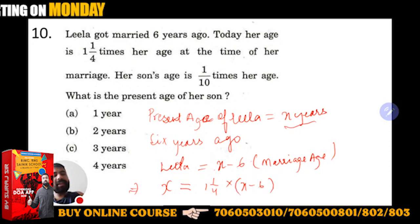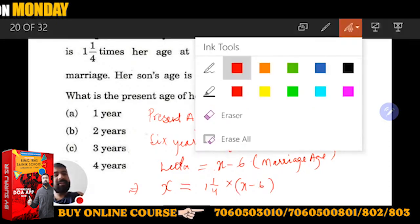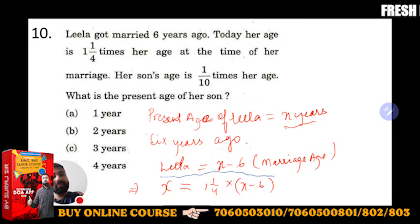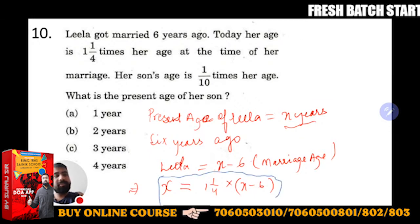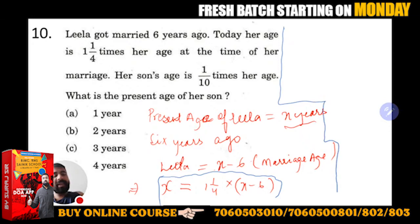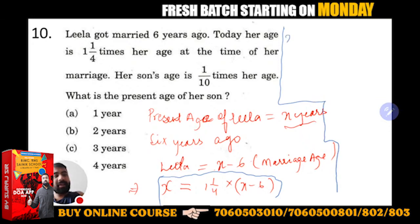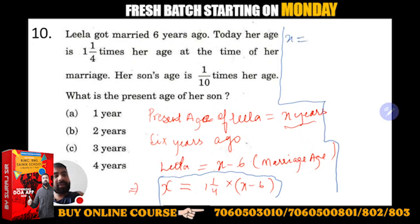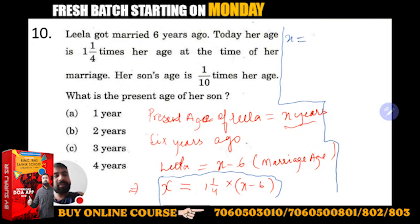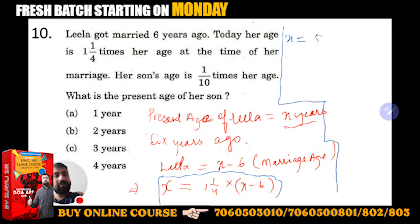This is a very simple calculation. This is how we solve it. x is equal to the mixed fraction — we will solve it: 1 and 1 by 4 becomes 4 plus 1 = 5, so 5 by 4.